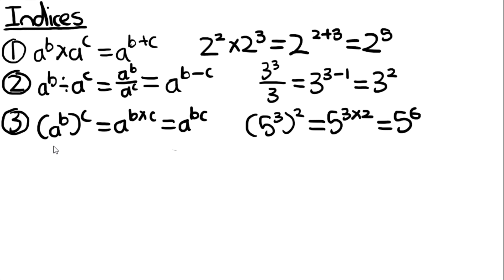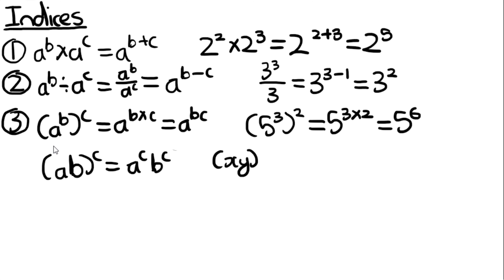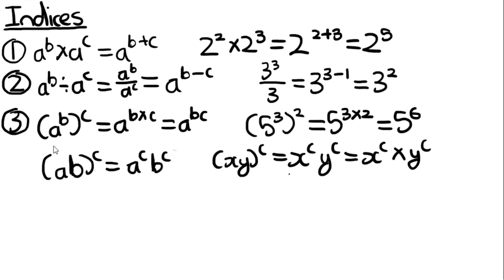Something else related to this law: if you have two terms, say A and B, and you raise both of them to a power C, it's going to be A^C times B^C. This is quite useful for algebra. So if it was (x·y) to the power of C, it would be x^C times y^C — they both get raised to the power of C.